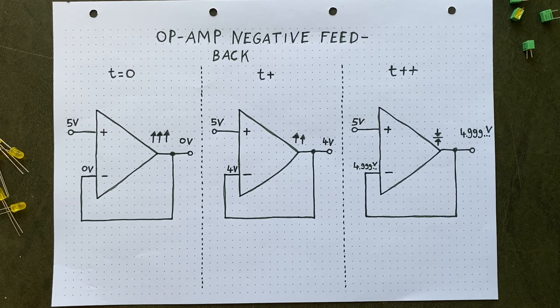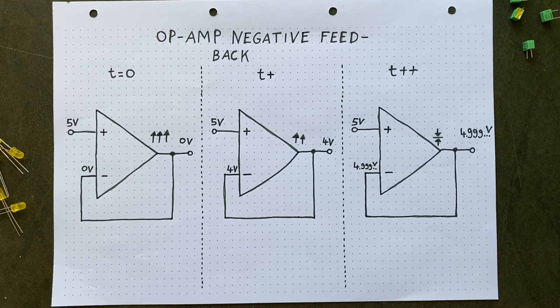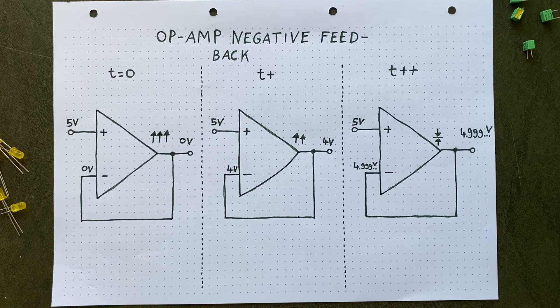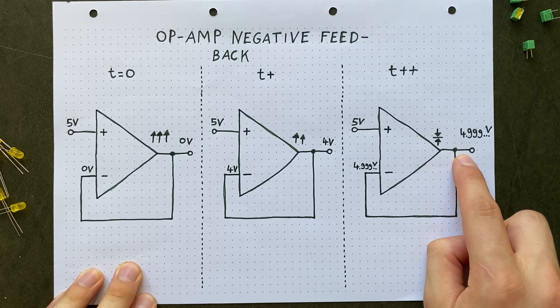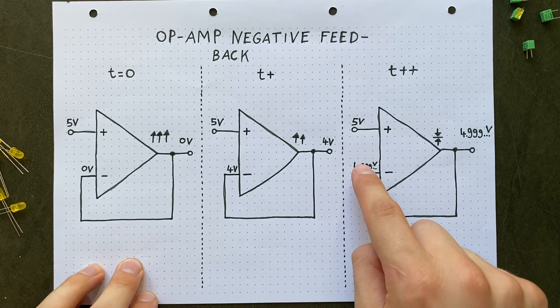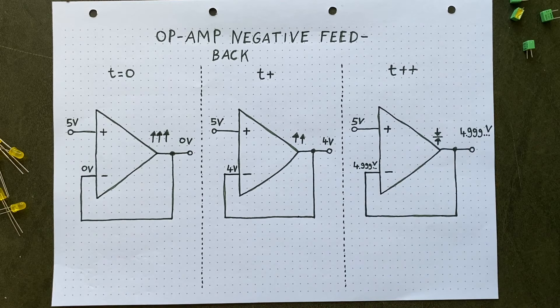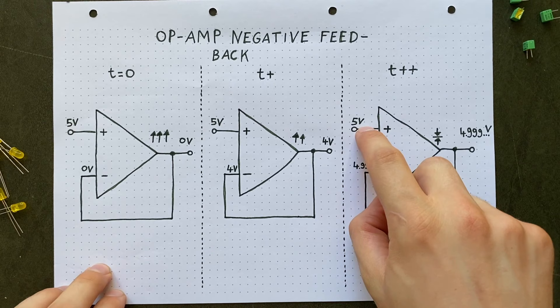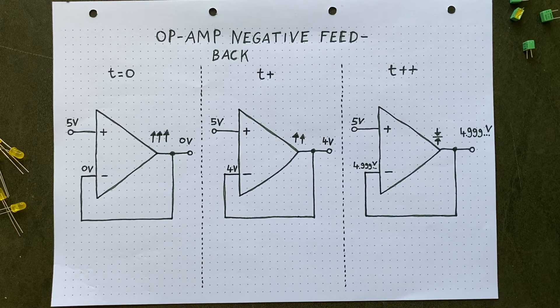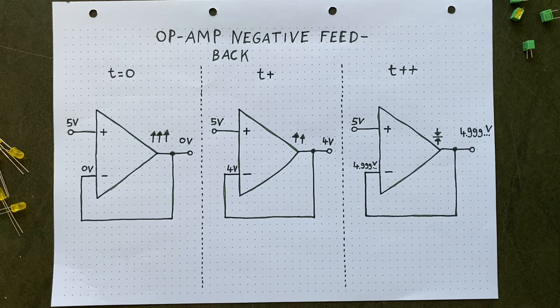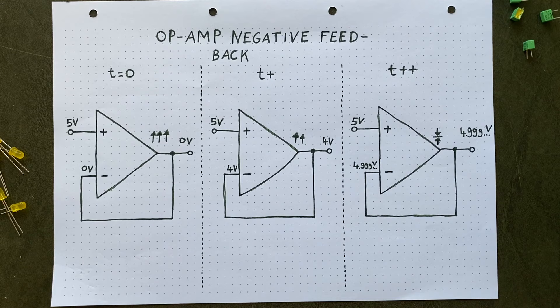But as the voltage at the inverting input gets closer and closer to 5V, the difference will get so small that the gain suddenly isn't so huge anymore, relationally speaking. Then, the whole system enters a state of balance. The output will stabilize at a voltage level that is a tiny fraction below 5V, so that the difference between the two inputs multiplied by the huge gain results, again, in exactly that voltage slightly below 5V. The whole thing is circular, a feedback loop. Now, if we were to increase or decrease the voltage at the non-inverting input, that feedback loop would ensure that the output voltage is always following. So, that's why this configuration works as a buffer. The output is simply mirroring the input.